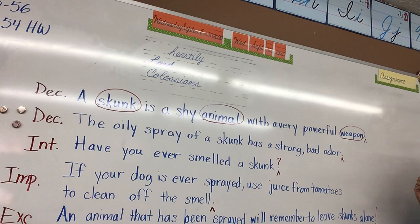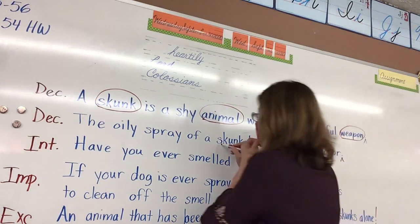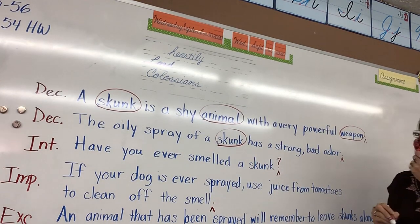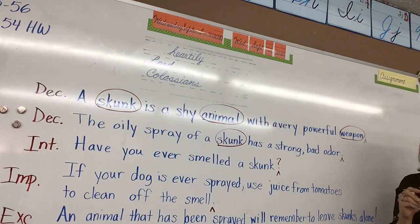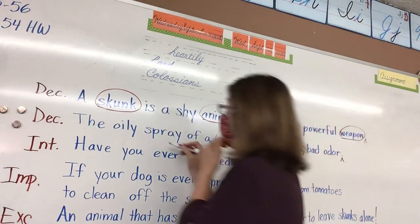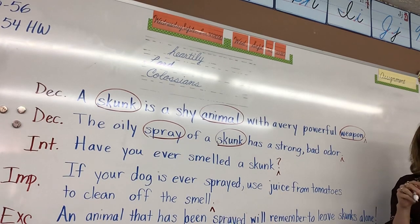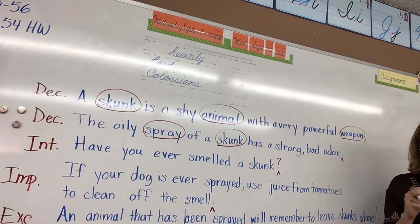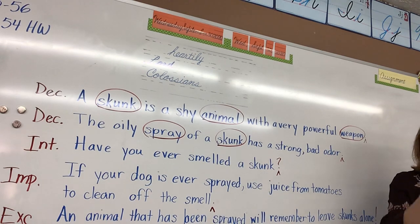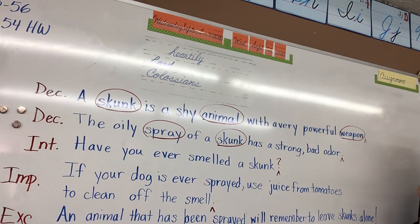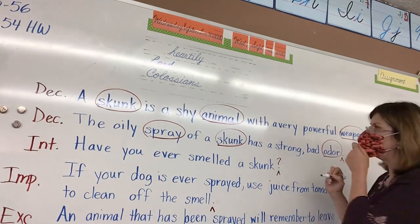'The oily spray of a skunk has a strong bad odor.' Skunk — that's the easy one. Now I have two more. Spray — oily spray is what kind of spray it is, oily describes it but spray is the noun. Do you see another one? Odor. Very good — odor is a noun.